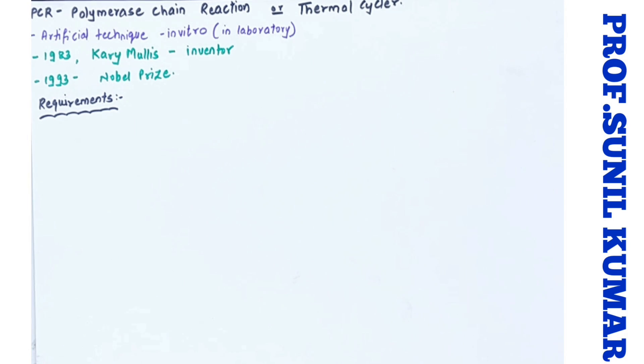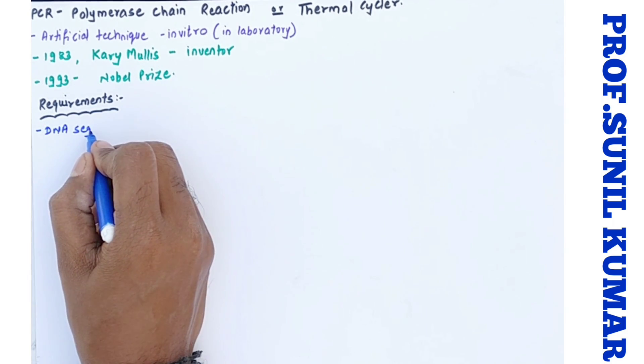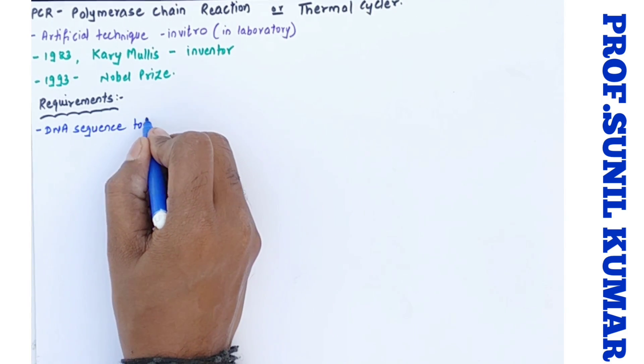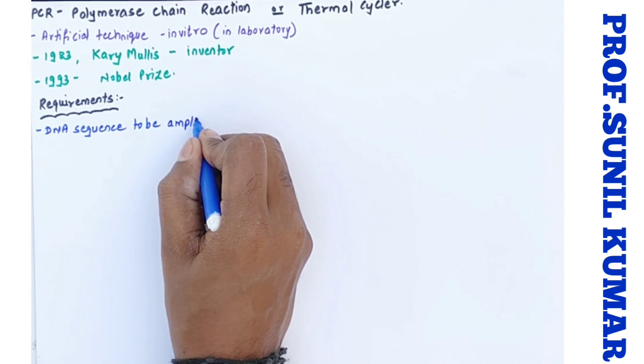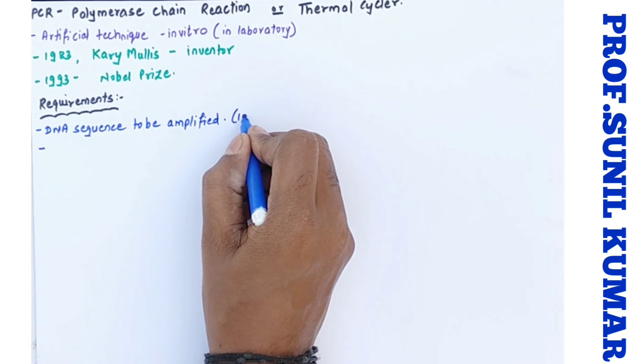We need to understand the requirements for DNA amplification or we can say PCR. So first we need a DNA sequence that has to be amplified or the sequence. Now here we need to understand that the DNA sequence should be somewhere around 100 to 35 kilobase pairs.